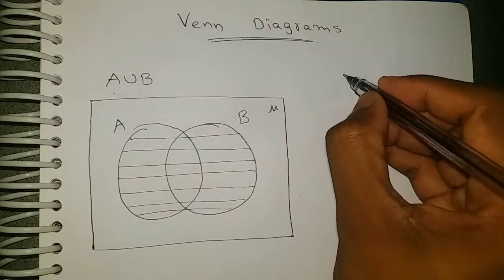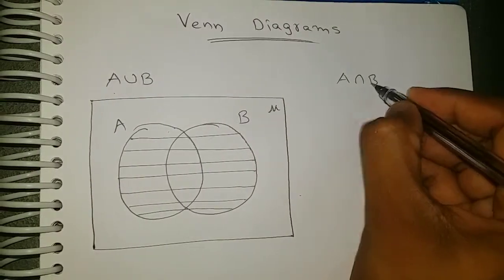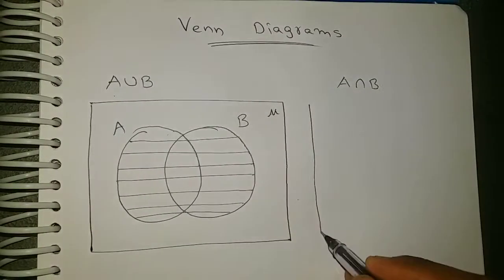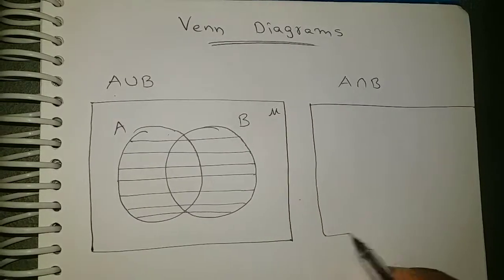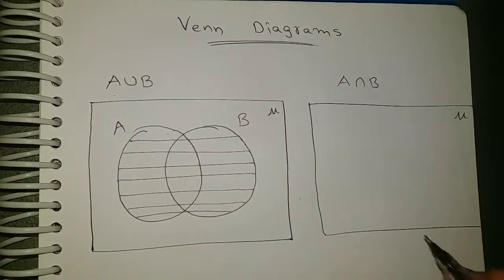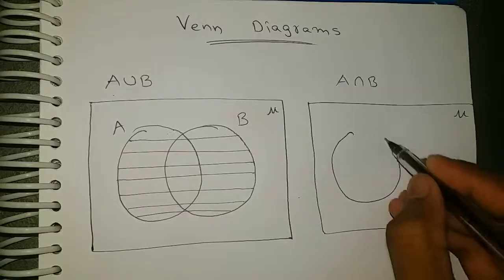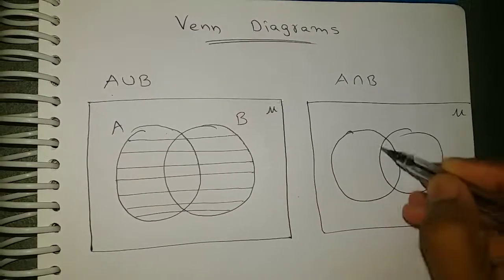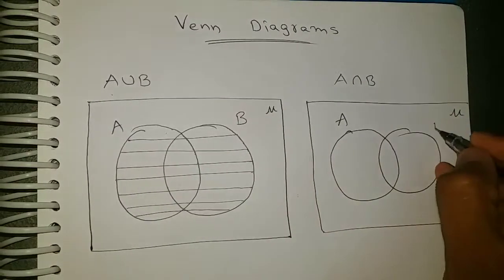Next, how to draw Venn diagram for A intersection B. Universal set. The two circles, one circle for set A and one circle for set B. A and B.